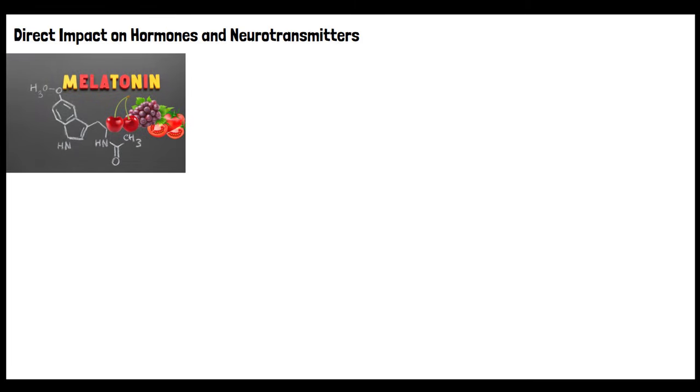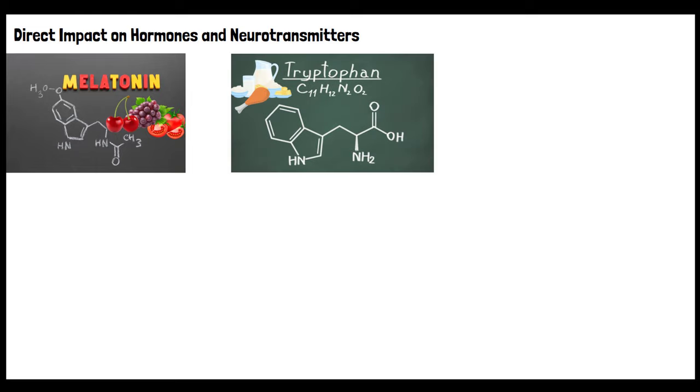Direct impact on hormones and neurotransmitters. Some foods like cherries, grapes, and tomatoes contain melatonin, the hormone that helps regulate sleep. Foods rich in the amino acid tryptophan, such as turkey and dairy, can aid in the production of melatonin and serotonin, a neurotransmitter that has mood-stabilizing effects. A balanced diet rich in complex carbohydrates and protein can help in the production of serotonin, which later converts into melatonin.